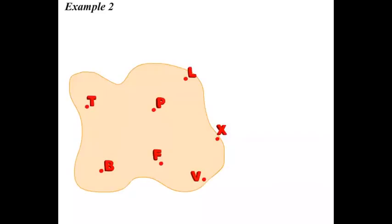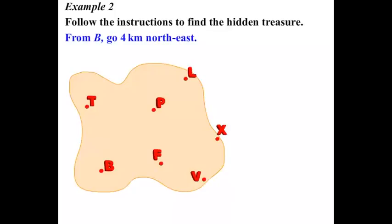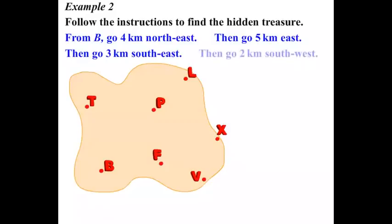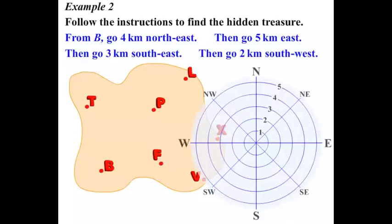Example 2. We've got our island there. We're asked to follow the instructions to find the hidden treasure. This sounds like good fun. From B, we're going to go 4km North East, then go 5km East, then 3km South East, and finally then go 2km South West. We've got our little compass there, which has markings which indicate distance as well. We're going to use this tracker to help us.